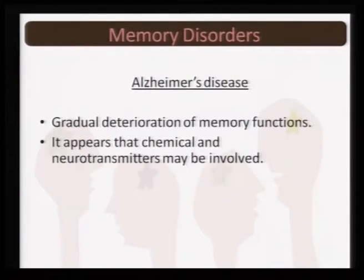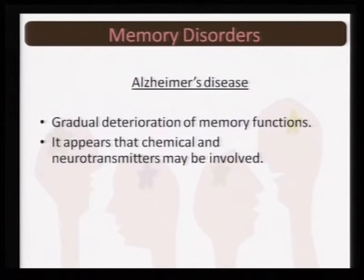Alzheimer's disease is one of the memory disorders reported nowadays. It primarily refers to gradual deterioration of memory functions, and it appears that chemical changes and neurotransmitters could be involved in this type of gradual memory loss. Let us see a video from the National Institute of Aging describing Alzheimer's disease.